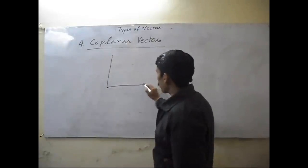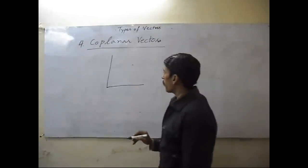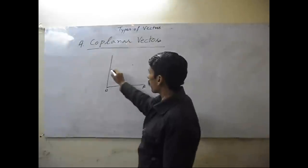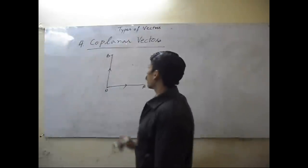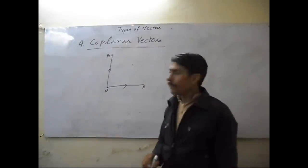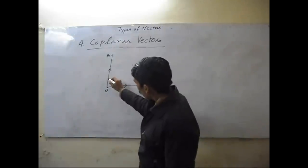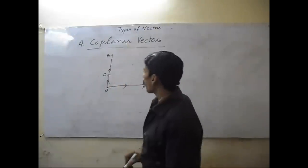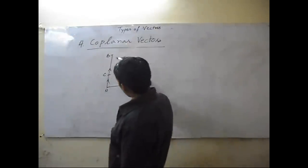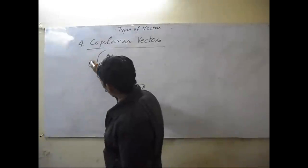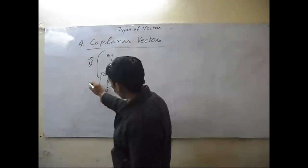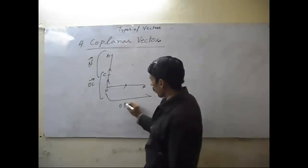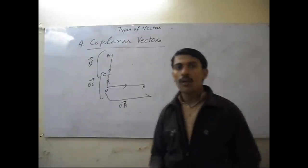This is the plane, this is vector A, and this is vector B. There is also a point C. The vectors BC, OC, and OA are co-planar.